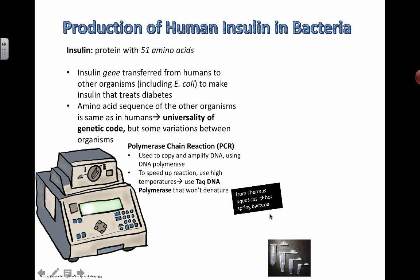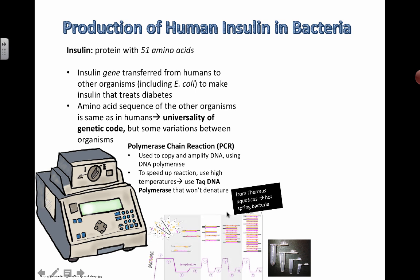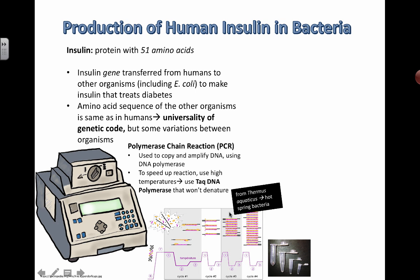This bacteria — a species named Thermus aquaticus — lives in hot springs. The DNA polymerase they use has been named TAQ DNA polymerase, and that's what we use to speed up this process, making multiple copies of the DNA at high temperatures.